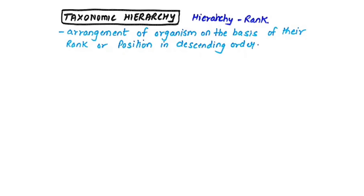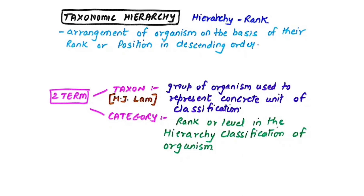Taxonomic hierarchy means that every person or organism has a rank. In a school, there is a trustee, principal, vice principal, supervisor, teachers, staff, peons, and students — these represent a hierarchy. Similarly, in biology, the arrangement of organisms based on their rank or position in descending order is called taxonomic hierarchy. In classification, we start from the kingdom (highest) down to species (lowest).